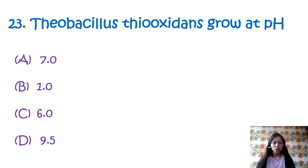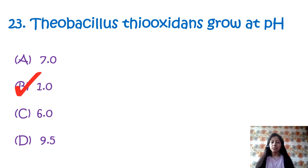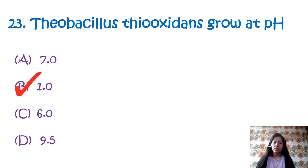Question 23: Thiobacillus thiooxidans grows at a pH of — option A: 7, option B: 1, option C: 6, option D: 9.5. Thiobacillus thiooxidans is a gram-negative, rod-shaped bacteria that uses sulfur as its primary energy source. It grows at a pH of 1 and is an acidophile, aerobic, and chemolithotroph microorganism. The correct answer is option B, pH 1.